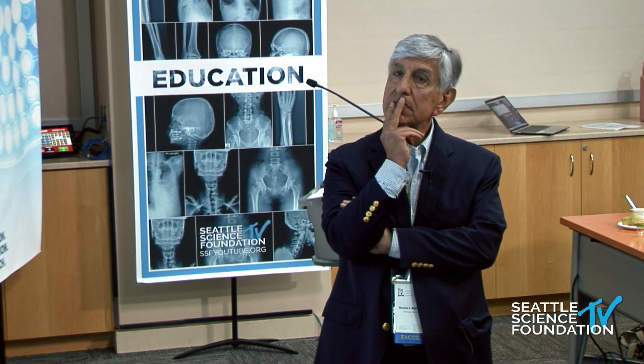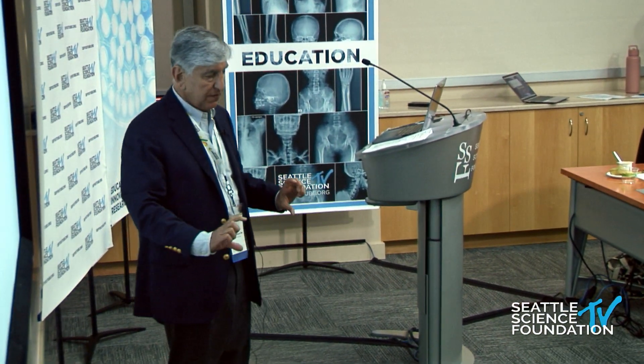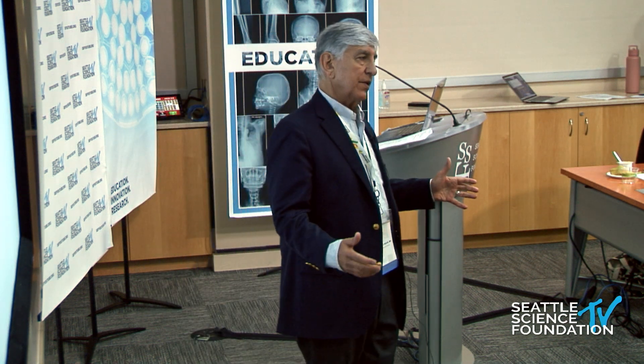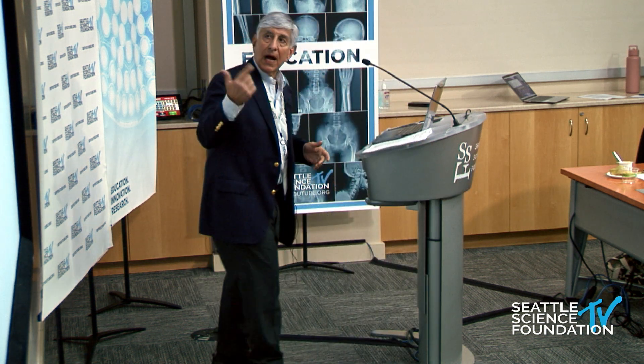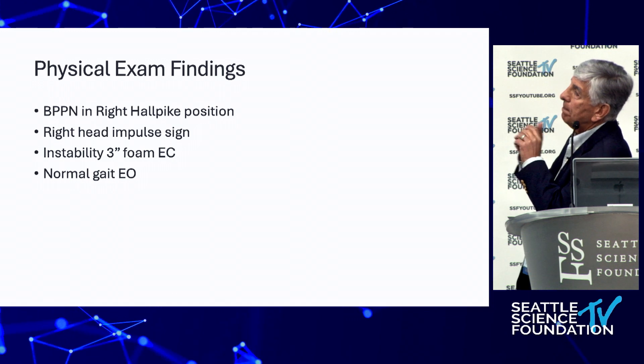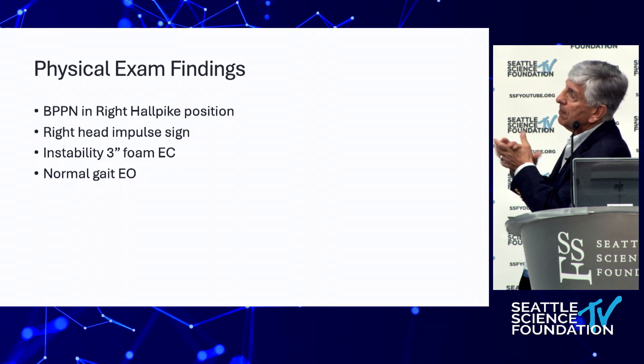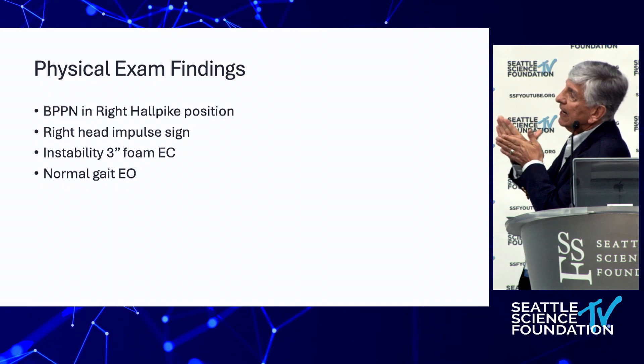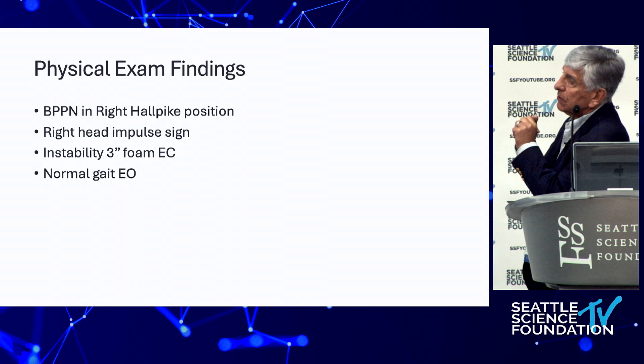The panelist chose option B — post-neuritic BPPV — which has been documented many times in the literature. An additional instability test mentioned: have the patient stand on a three-inch foam pad with shoes off and eyes closed to assess balance — this is quite challenging and reveals proprioceptive compensation deficits. The preliminary diagnosis was benign positional vertigo post-neuritis.